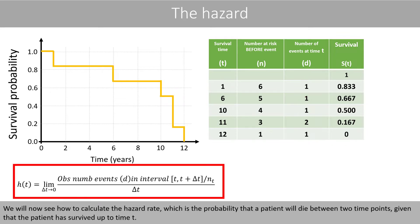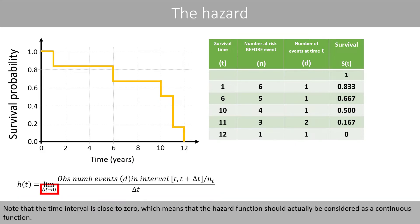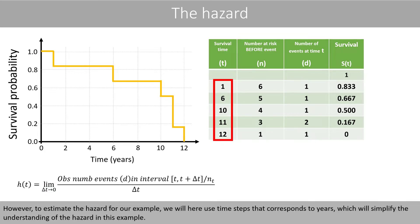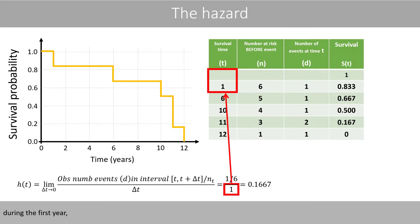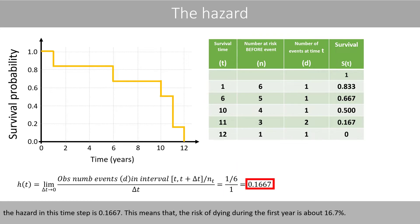We'll now see how to calculate the hazard rate, which is the probability that a patient will die between two time points, given that the patient has survived up to time t. Note that the time interval is close to zero, which means that the hazard function should actually be considered as a continuous function. However, to estimate the hazard for our example, we'll use timesteps that correspond to years. Since only one person died after one year out of six individuals during the first year, the hazard in this timestep is 0.1667, meaning the risk of dying during the first year is about 16.7%.